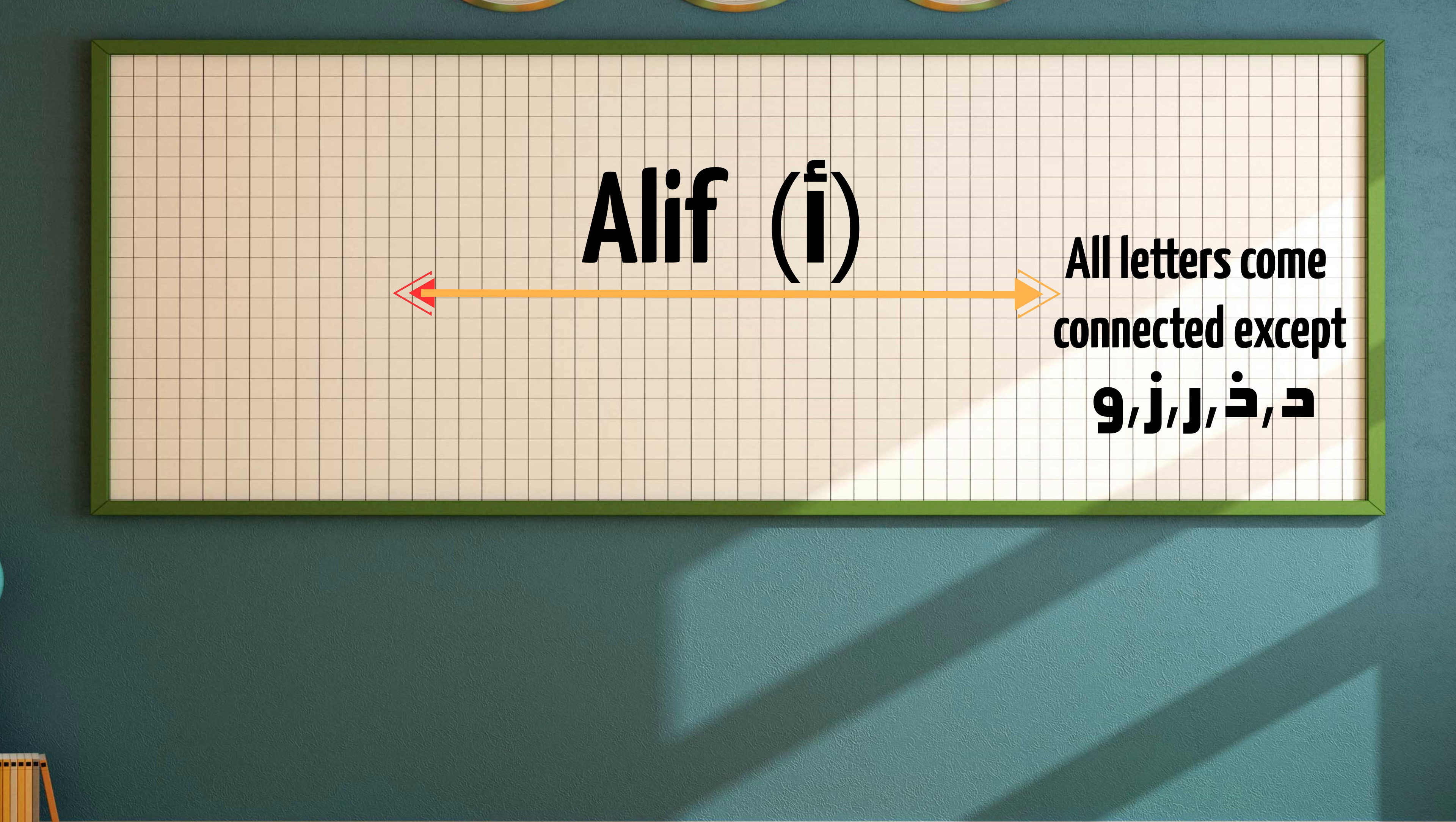And those letters are Dal, Thal, Ra, Zain, and Waw. However, all letters are never connected to Alif if they come after it. So before it all letters are always connected except the five letters that we mentioned, and after it they are never connected. So if you write letters after Alif without a second thought, never connect them to it. Now let's move on to see the next bundle of letters.